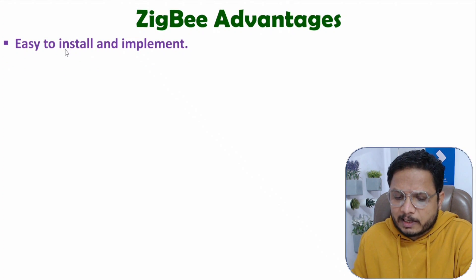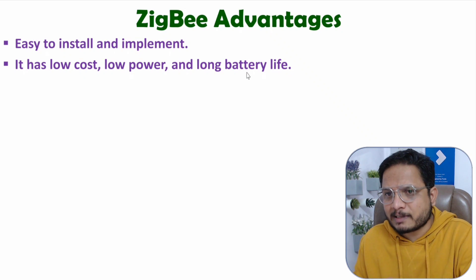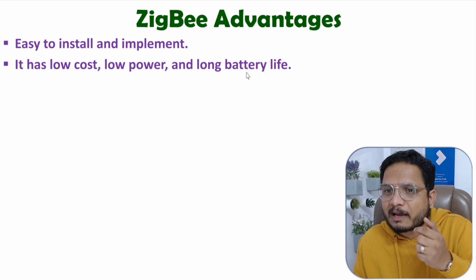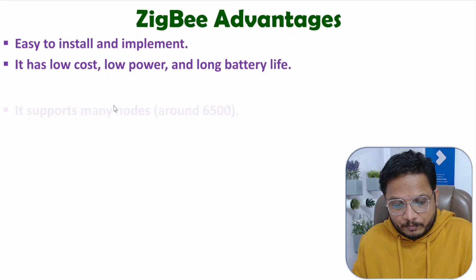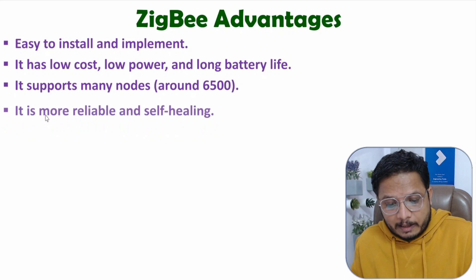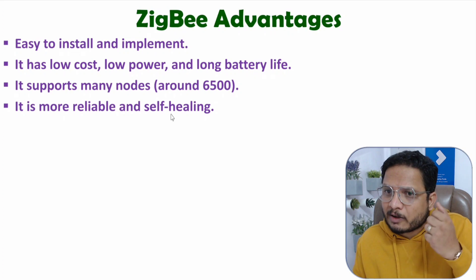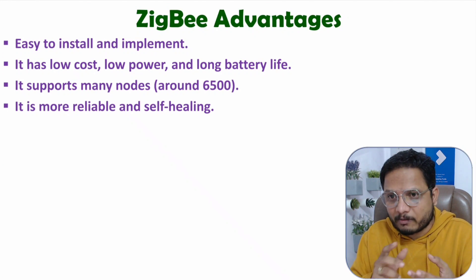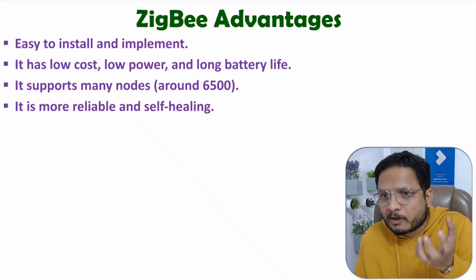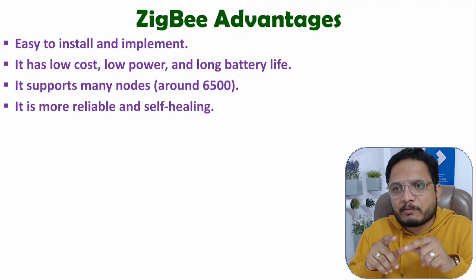Advantages of ZigBee: it is easy to install and implement, has low cost, is a low-power device, and has longer battery life due to periodic communication from end devices — continuous power dissipation does not occur. It supports up to approximately 65,000 nodes interconnected in a ZigBee network. It is also more reliable and self-healing — if any node fails, the rest of the network continues to function.